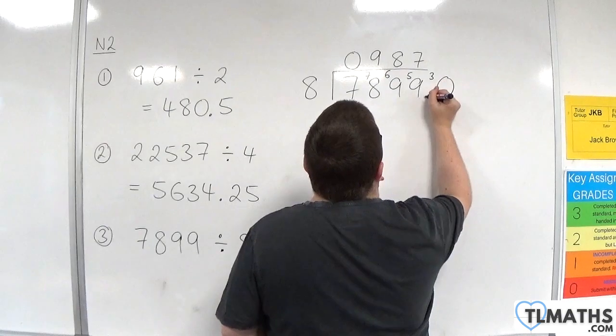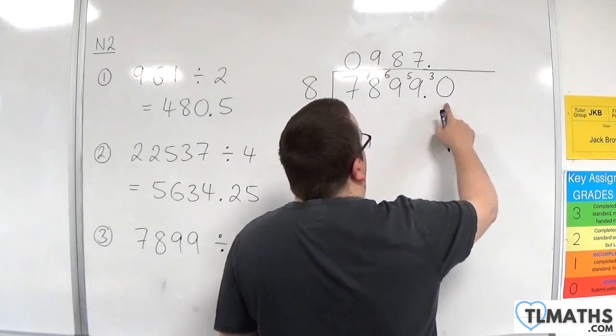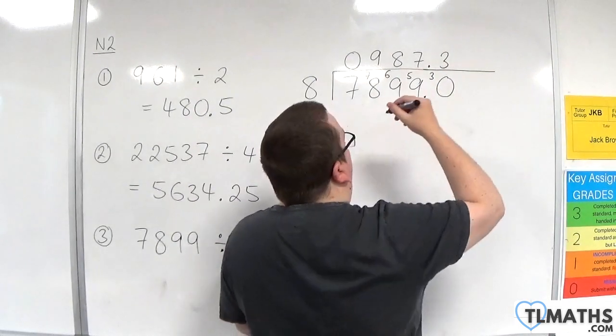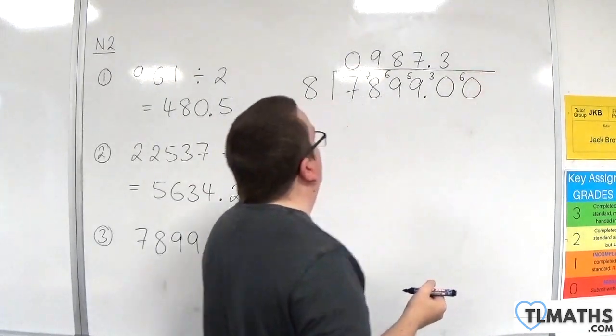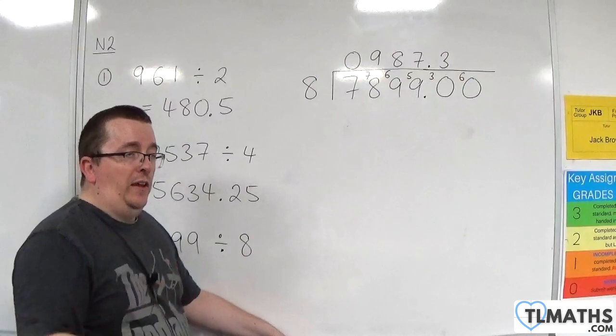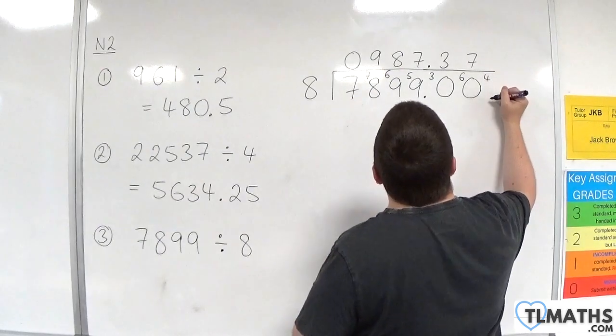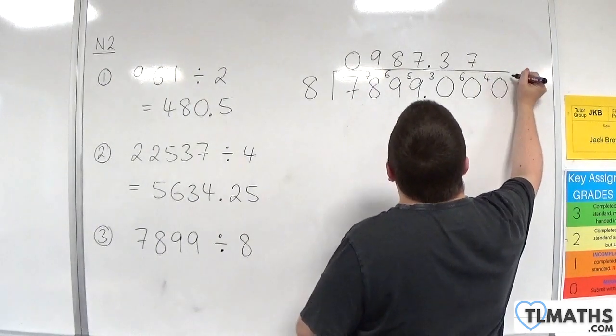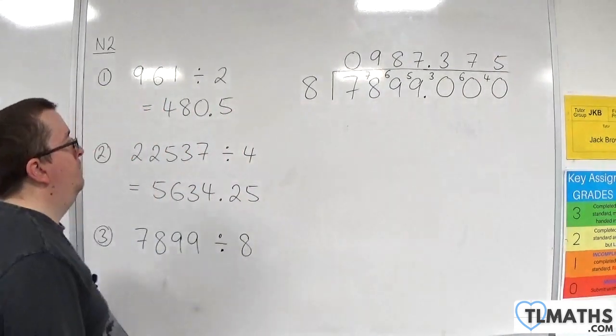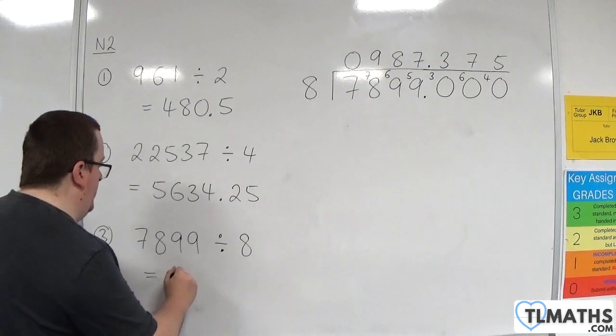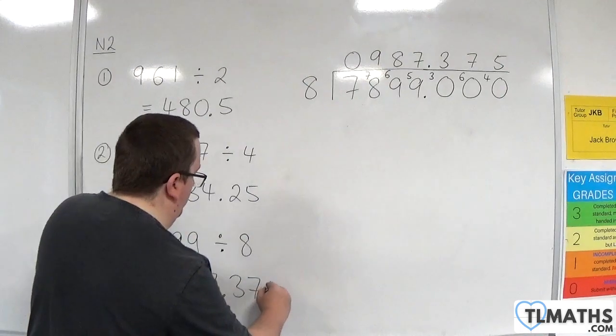Now at this point, we put in a 0 and we bring in the decimal points. 8's into 30 go 3. 3 eights are 24 with 6 left over. Put in another 0. 8's into 60 go 7. 8 sevens are 56 with 4 left over. Bring in another 0. 8's into 40 go 5 with no remainder. And so this is equal to 987.375.